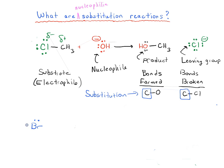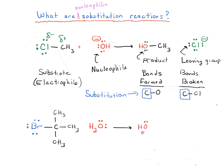Let's look at a slightly different substitution reaction. We'll put bromine attached to a carbon with three other CH3 groups attached — this molecule is called tert-butyl bromide. We're going to have it react with water, and we're going to form a product where the oxygen is connected to that carbon with three CH3 groups, and we end up with HBr as well.